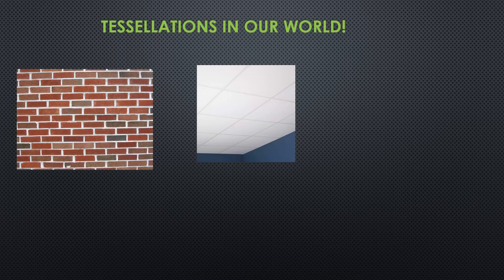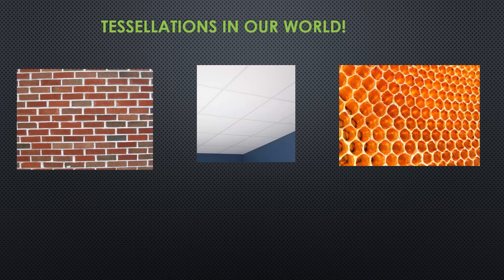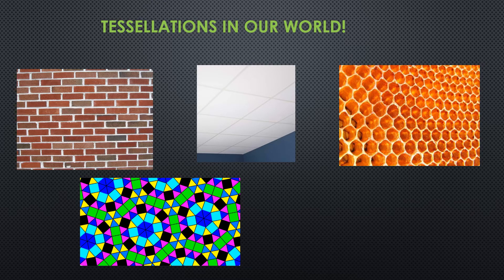Think about our classroom or many other ceilings that have tiling — we have those suspended ceiling tiles that are all the same, pieced together, fitting nicely without overlapping or gaps. Think about a honeycomb with bees; those are all beautiful, natural tessellations together without overlapping or gaps. Here's a more advanced mosaic — you might find this on stained glass windows or tapestry, where squares and triangles form a beautiful pattern together.